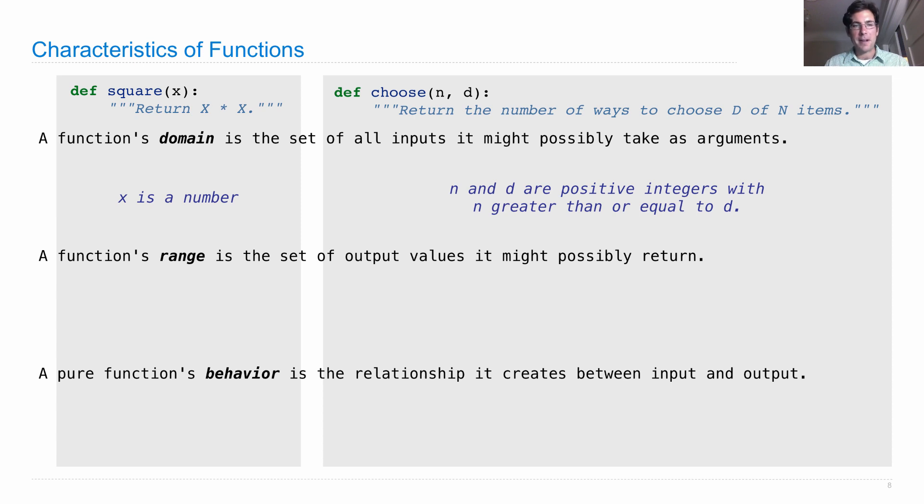A function's range is the set of output values it has. Square will always return a positive real number, whereas choose will return a positive integer. As you're defining it, you should make sure you're returning those things.